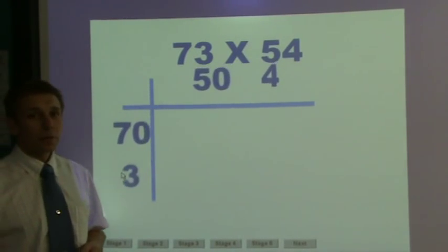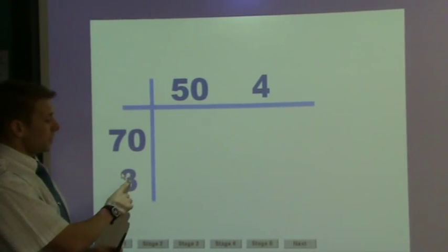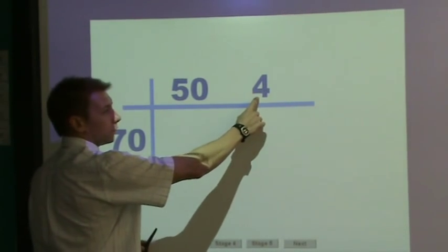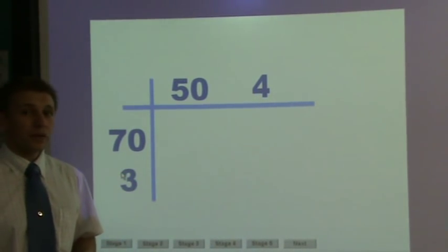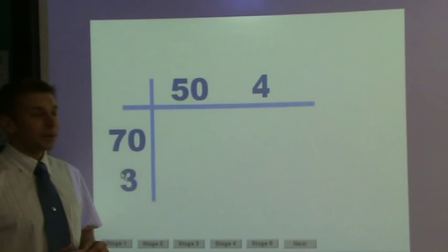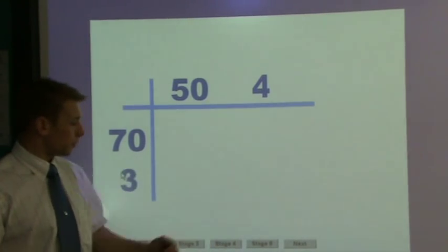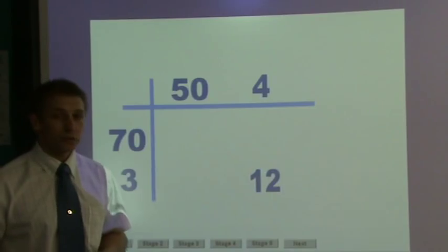Breaking these down into component parts, we have a 70 and a 3, and a 50 and a 4. The first step I would recommend is to try and do the simple multiplication of 4 multiplied by 3, giving an answer of 12.